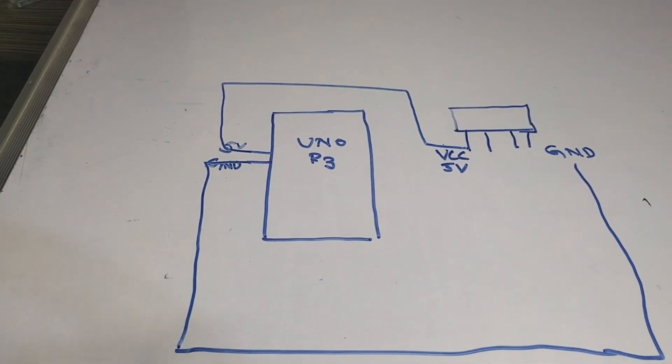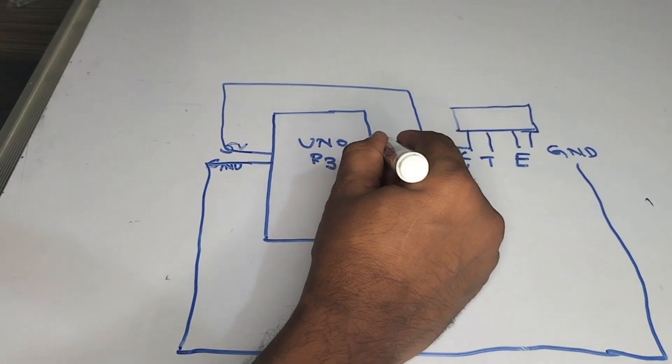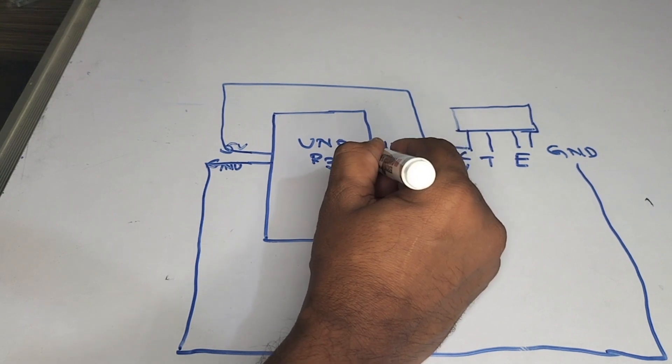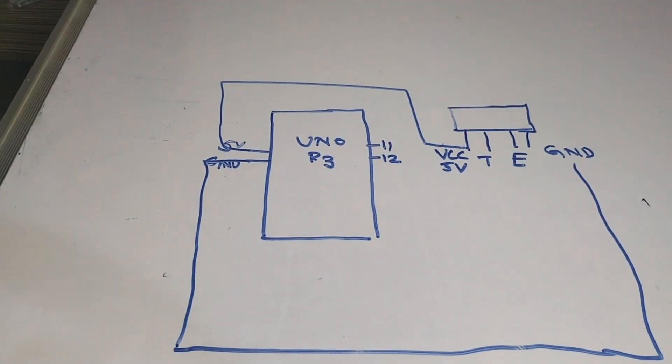Okay, friends. And this is the trigger, this is the echo. The trigger pin I am connecting to the 11th pin of the Uno, and echo pin I try to connect to the 12th pin of the Uno board.